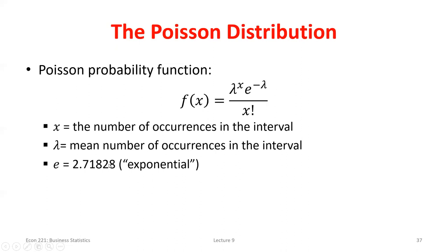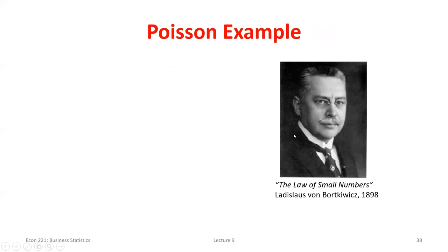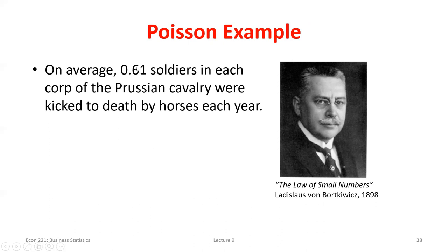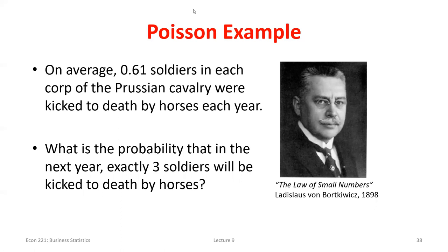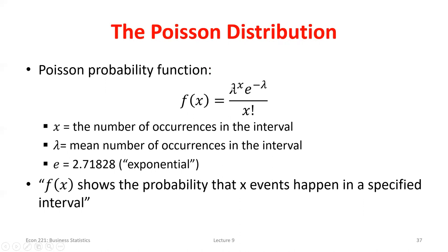Let's work through an example. There's this historical case where a researcher found that on average 0.61 soldiers die every year from being kicked to death by horses in the Prussian Cavalry. So over a year — our time interval — we typically see 0.61 soldiers die. That 0.61 is our lambda; it's the average rate we typically see over that interval of a year. Now, what's the probability that exactly three people are killed by horses in that army the next year? So x equals three and lambda equals 0.61. It's just a matter of plugging those into our equation.